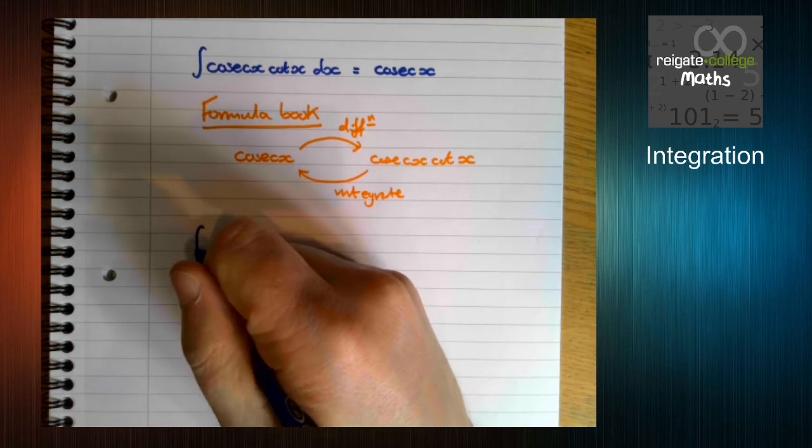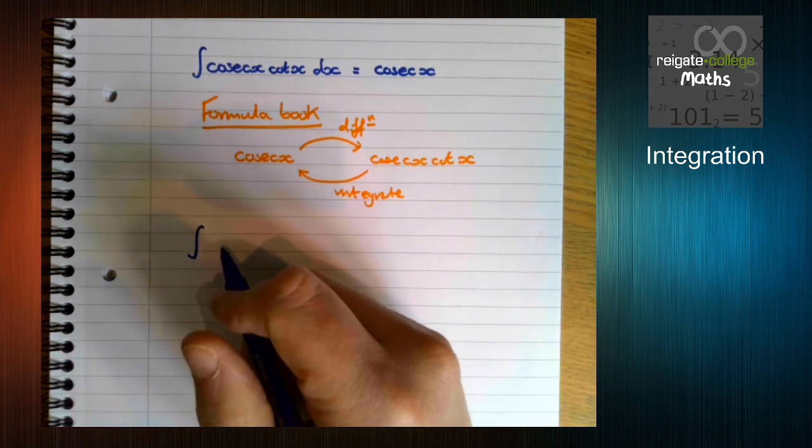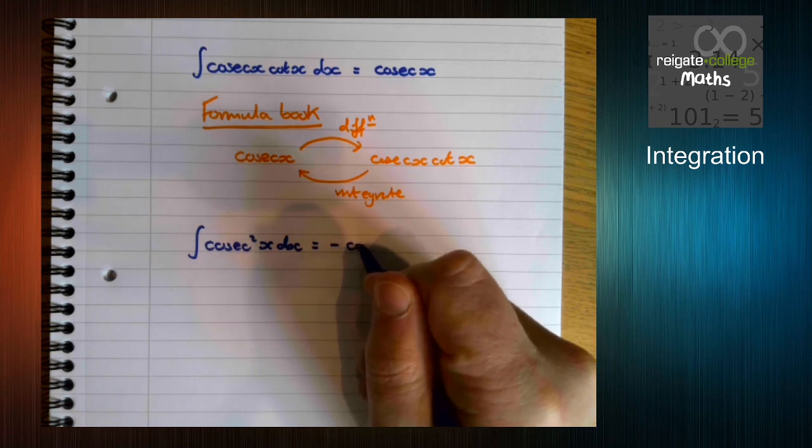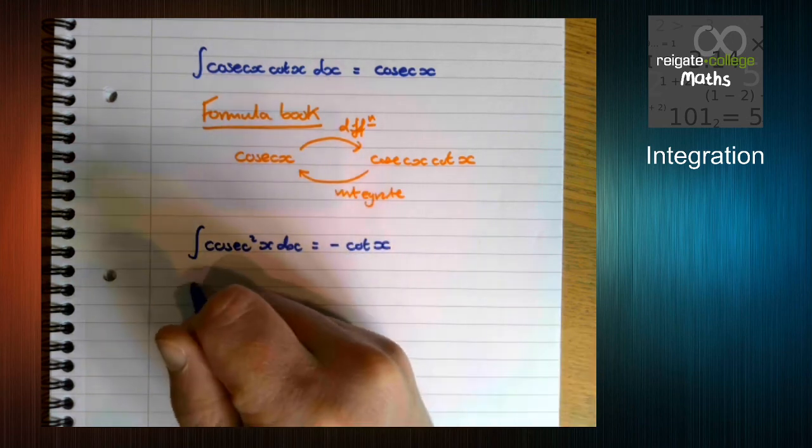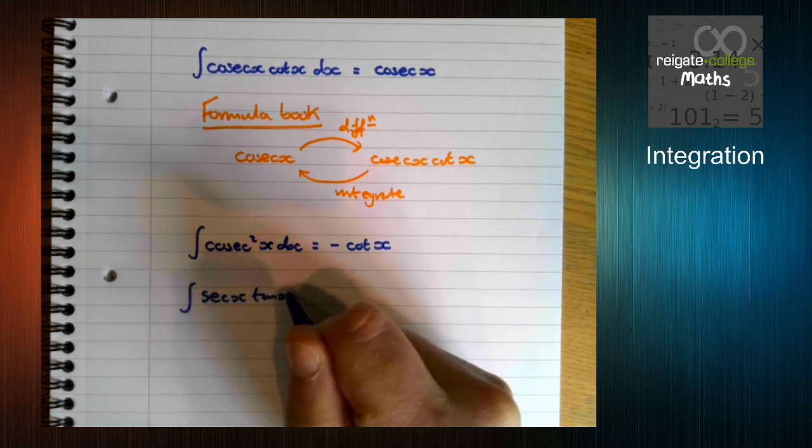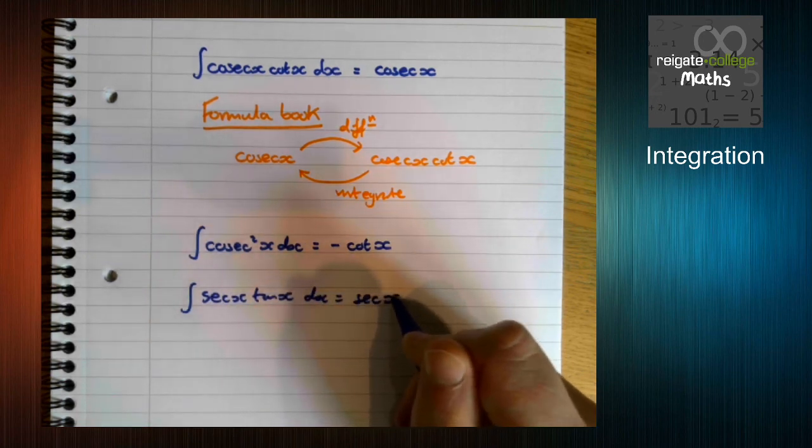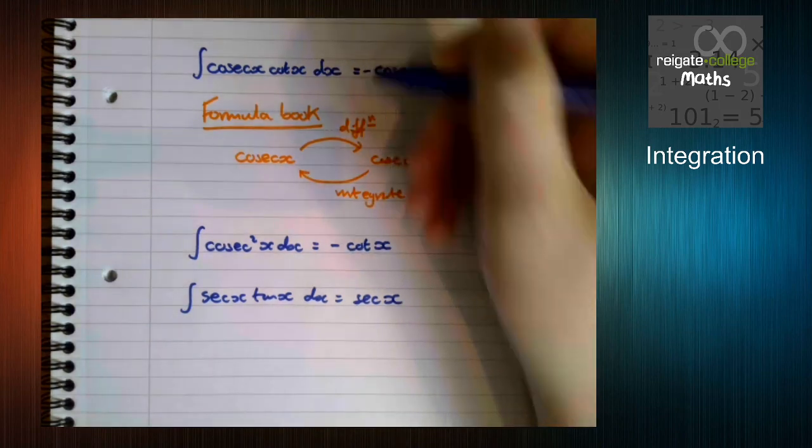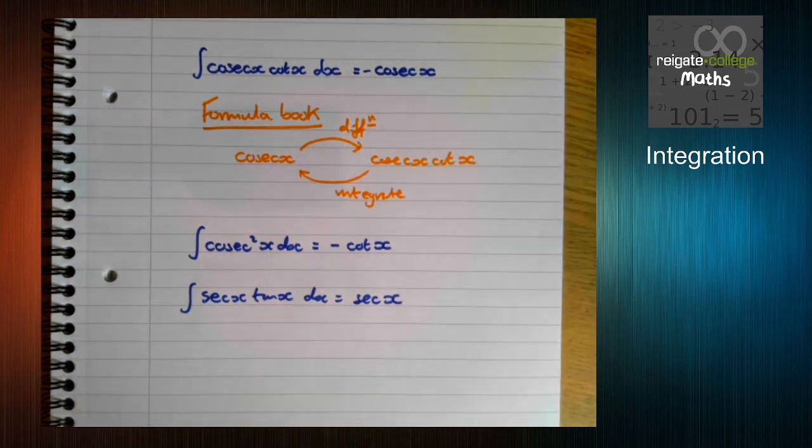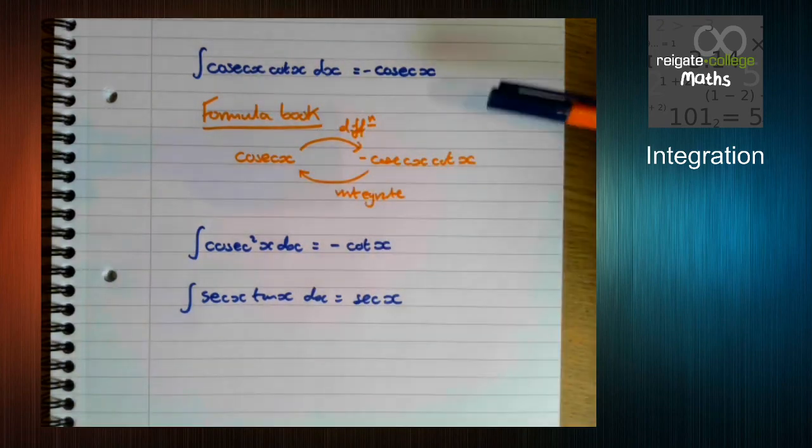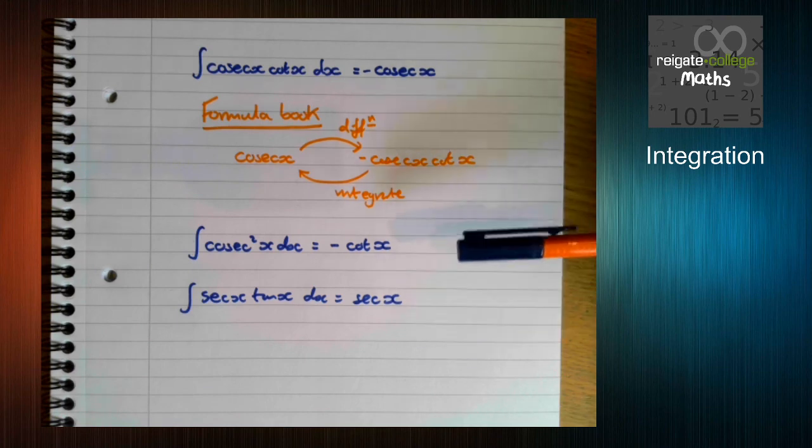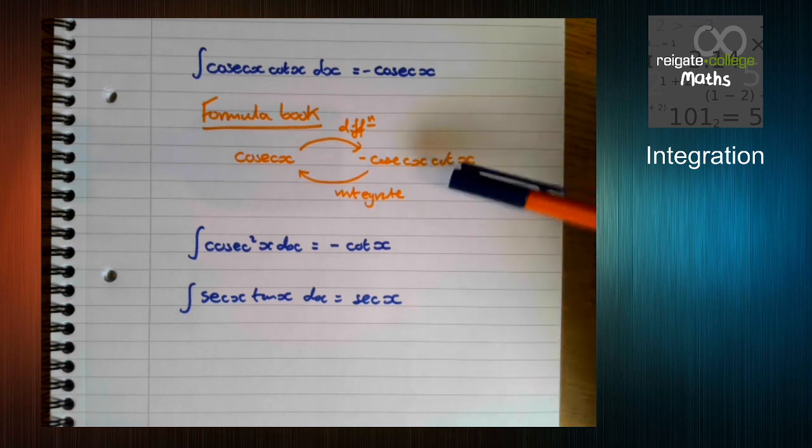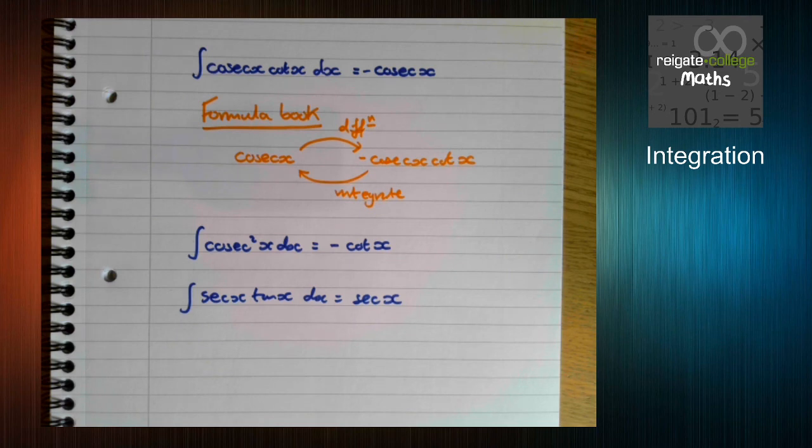The other standard results are very similar and they work in the same way. So we integrate cosec squared x, which gives us minus cot x. And we integrate sec x tan x to get sec x. So these three you can find in the formula book, just not in the integration section, they're in the differentiation section like they are here. So that's something you need to bear in mind for certain, for the exercises in certain textbooks.